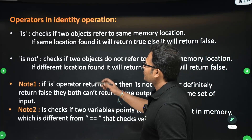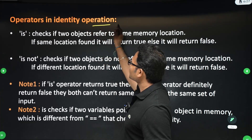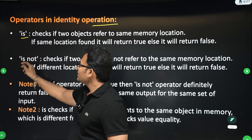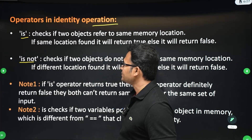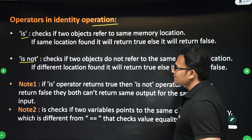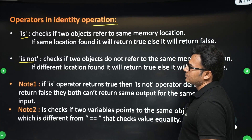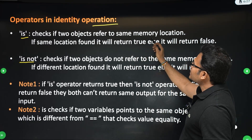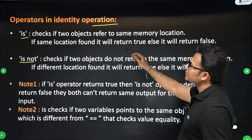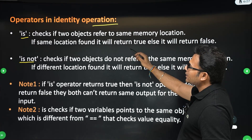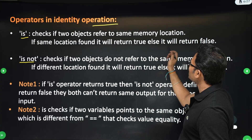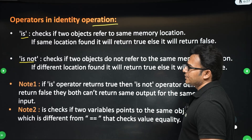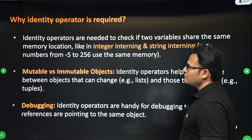The operators in identity operation are 'is' and 'is not'. 'is' checks if two objects refer to the same memory location. If the same memory location is found, it will return true; else it will return false. I'll show you this with an example.